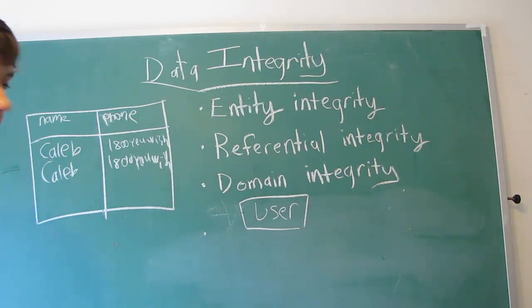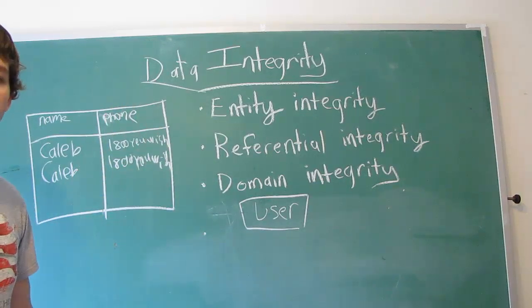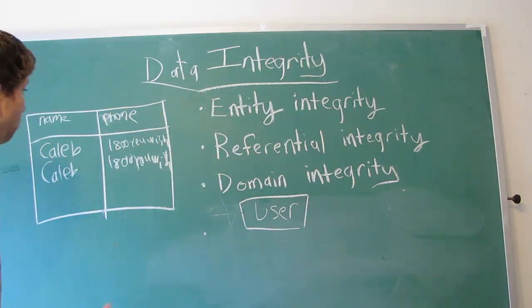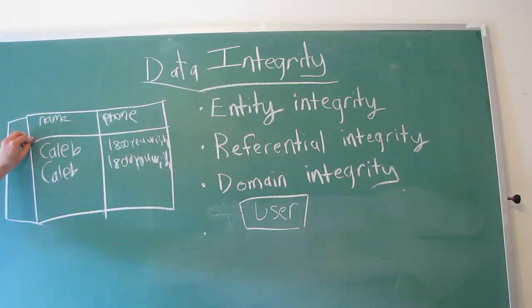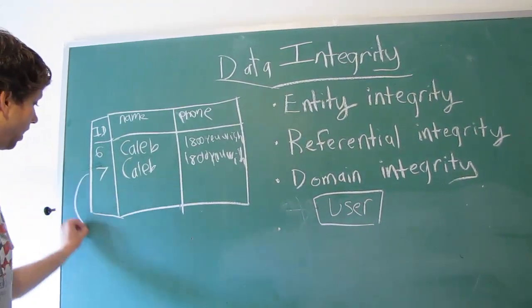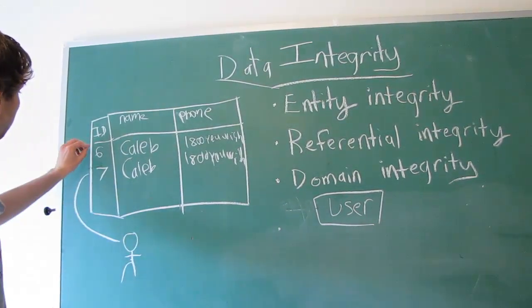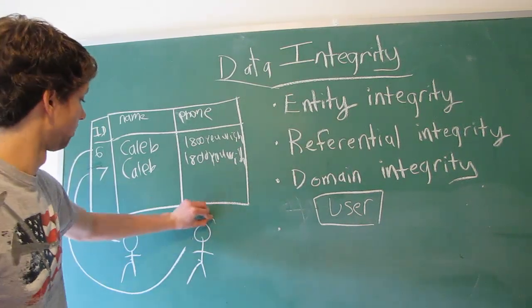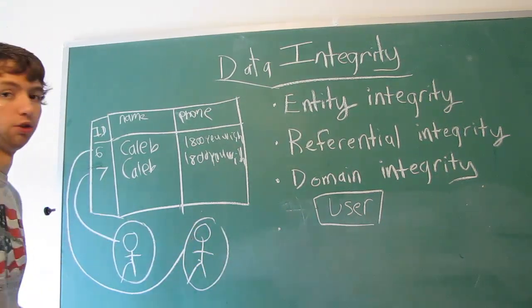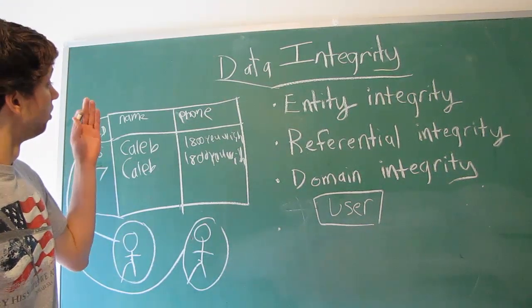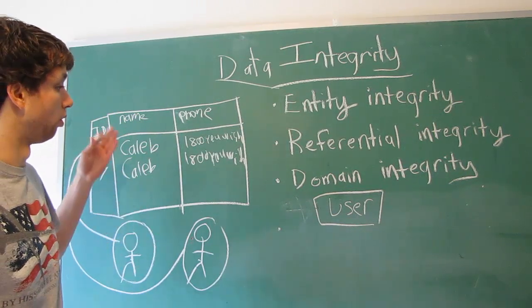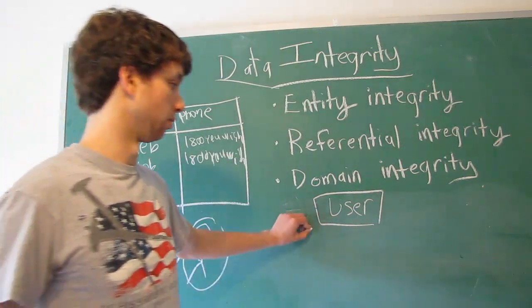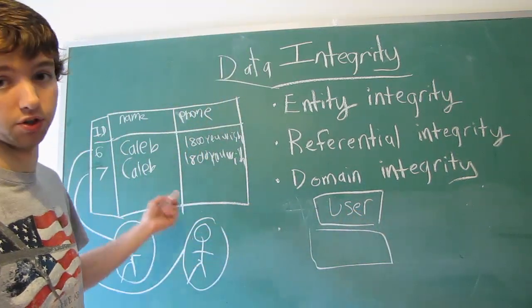So a way to solve this is to either add more columns to where the row would be unique, such as a social security number, or we could add an ID column, and this would be like six and seven. So now we're talking about two separate entities. This is talking about this guy because his ID is seven. This one is talking about this guy because his ID is six. They're two separate entities. That's entity integrity, having uniqueness among your entities. We have uniqueness with the rows, and we also have only one user table.